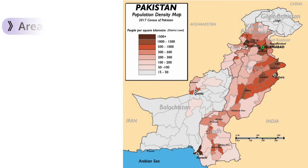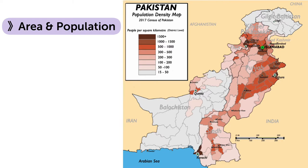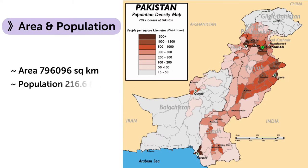The next one is area and population. Area-wise, Pakistan is the 33rd largest country, and the total area of Pakistan is 796,096 square kilometers, in which land is about 97% and water is 3%. Population-wise, Pakistan is the 6th most populous country, and the annual growth rate is 2%. The total population is 216.6 million according to 2019, which is 2.8% of the total world population.